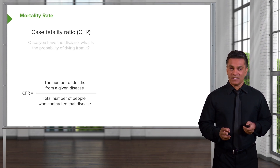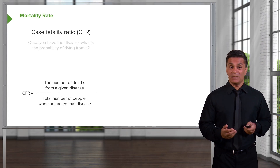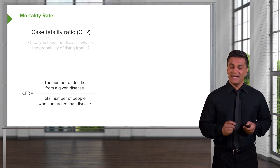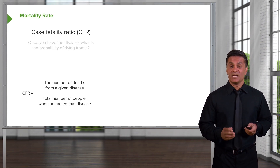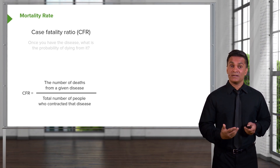For example, Ebola was known for a long time as having one of the highest CFRs we knew about. In the last few years, as our experience with Ebola got better, we've managed to reduce the CFR of Ebola from about 90% down to 60 or 70%, depending on the population we're looking at. That's entirely due to medical innovation and clinical experience. So CFR is not hardwired in the disease — it depends on our scientific and medical expertise in dealing with that disease.